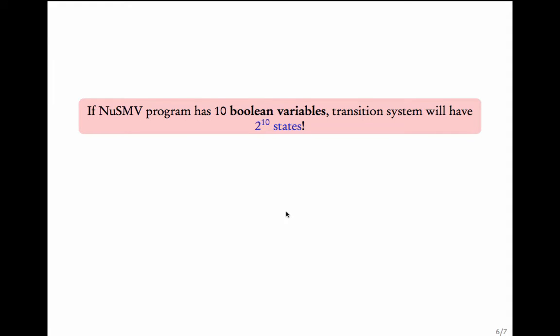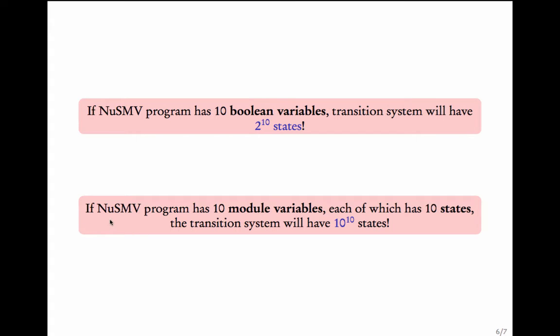If a NuSMV program has 10 boolean variables, then the transition system will already have 2 power 10 states. Now if the NuSMV program has 10 module variables, each of which has 10 states individually, then the transition system will have 10 raised to 10 states.